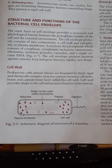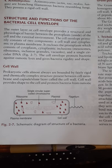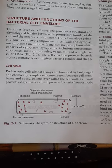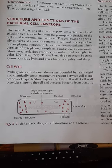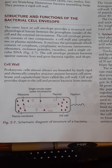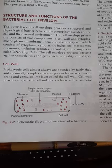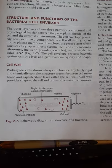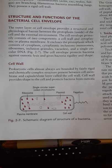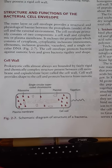The bacterial cell envelope is made up of two things: cell wall and cytoplasmic membrane. Inside the cytoplasmic membrane, different components like mesosomes, ribosomes, and DNA are present. The cell envelope protects bacteria from osmotic lysis and is responsible for giving bacteria their rigidity and shape.